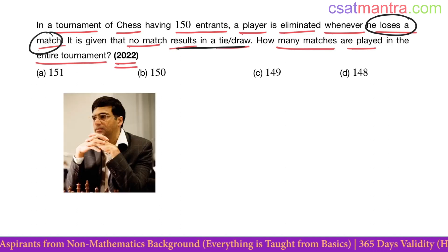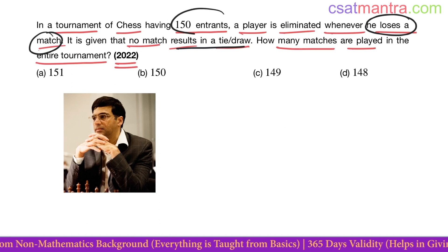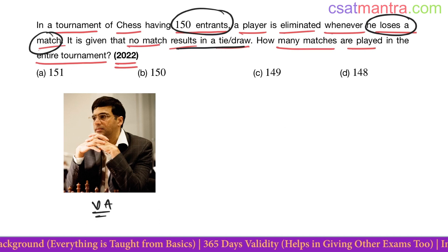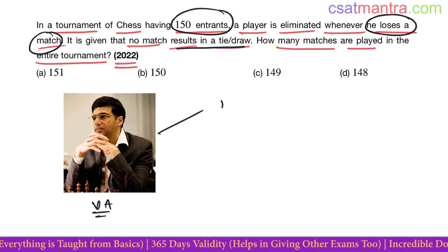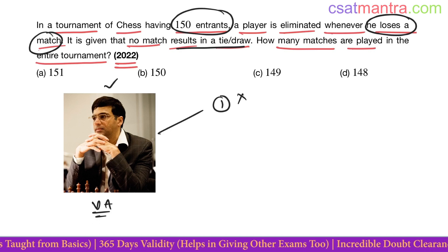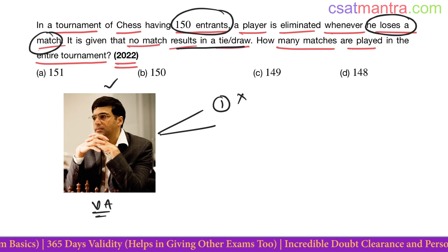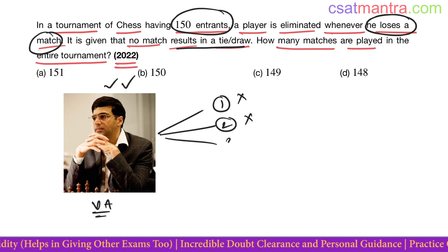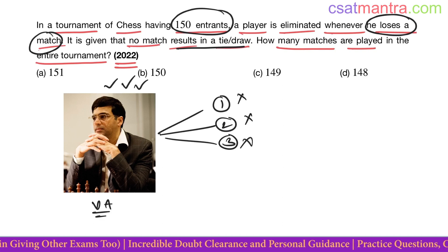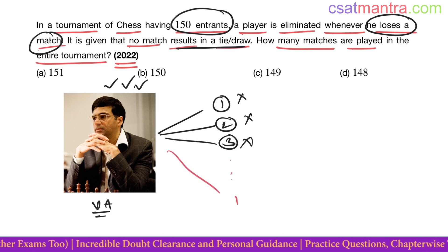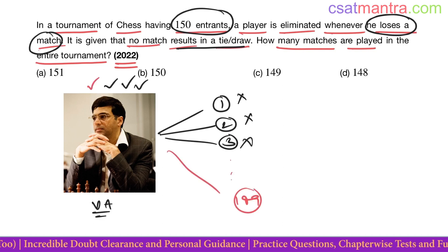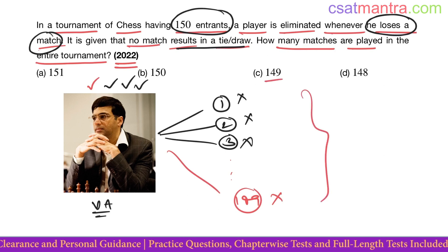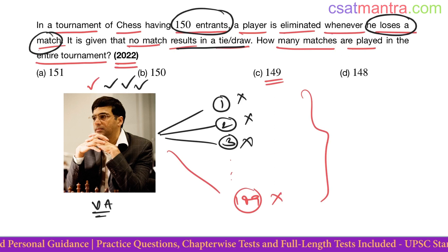Let's assume in these 150 entrants we have Vishwanathan Anand, who always wins. He plays a match with person 1, wins — person 1 eliminated. Plays with person 2, wins — person 2 eliminated. And so on, until person 149 is eliminated. So in total he plays 149 matches.